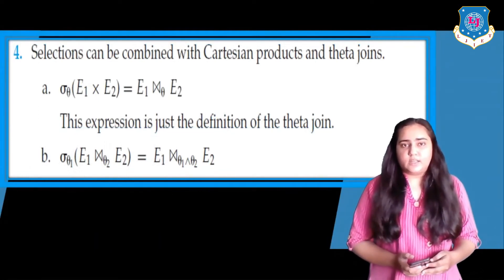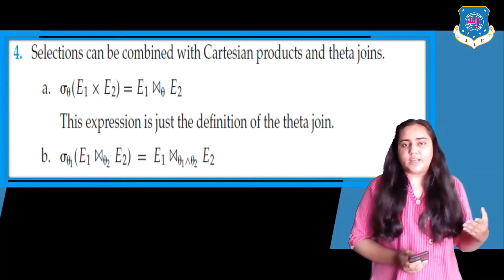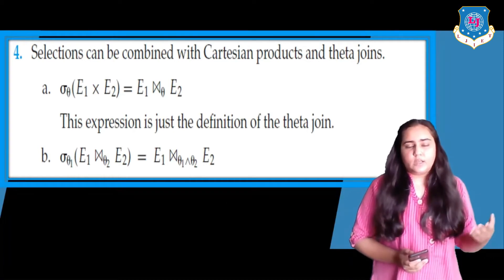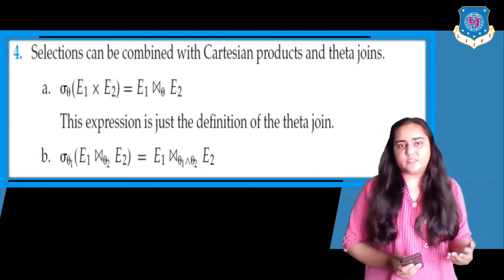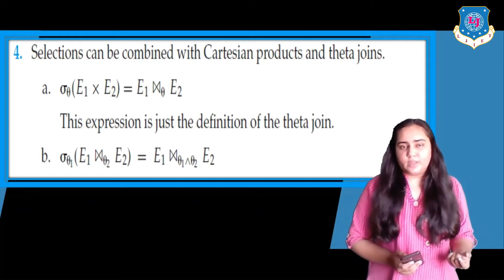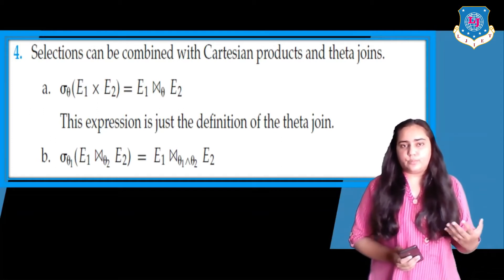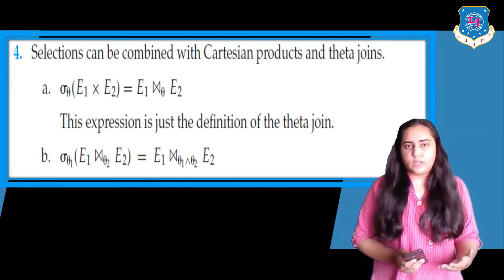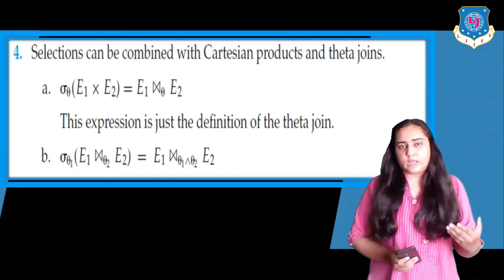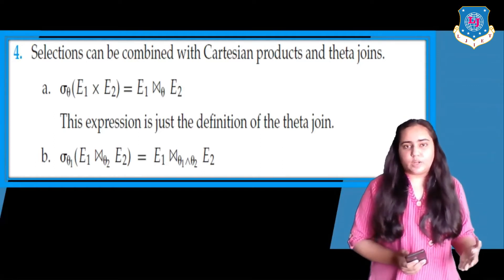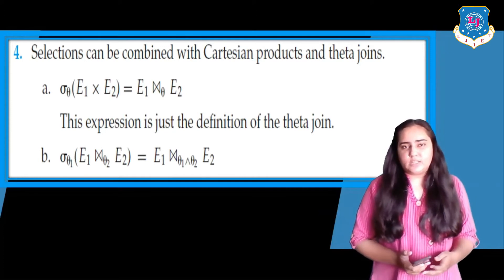The next rule says selections can be combined with Cartesian products and theta joins. In part A of rule 4, if you have sigma theta — where theta is the condition used with select — and two tables E1 and E2 on which you are performing a Cartesian product, this can be made equivalent to E1 theta join E2. So what exactly is a theta join?